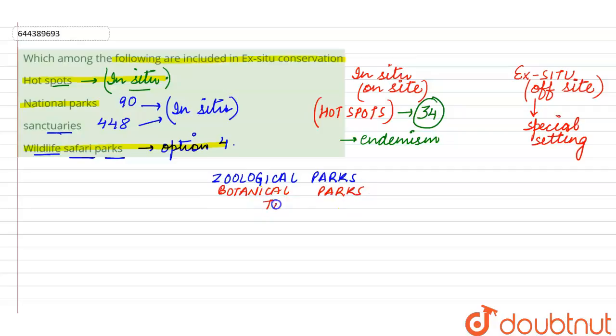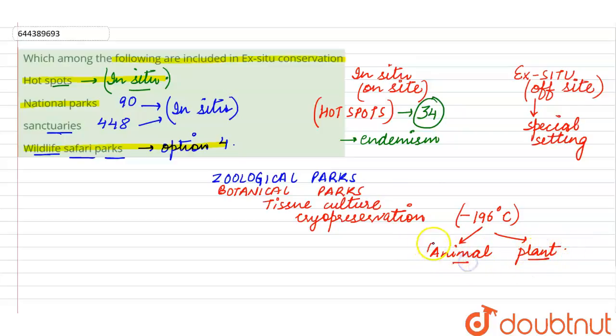Along with this, the higher technologies such as tissue culture can also be used to preserve plants, whereas cryopreservation is a technique to preserve animals as well as plants by preserving the gametes, seeds, pollen grains of these animals at very low temperature that is minus 196 degrees Celsius and later on it can be used for animal as well as plant breeding programs to preserve the endangered species.